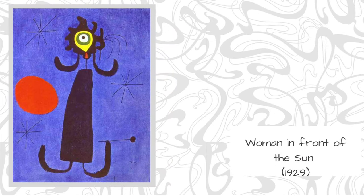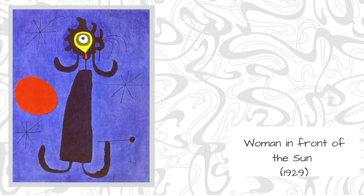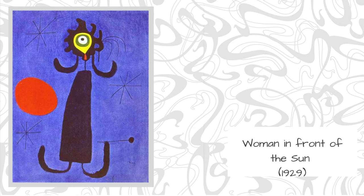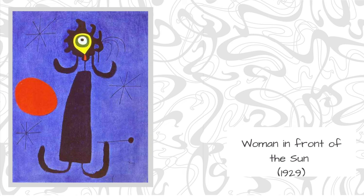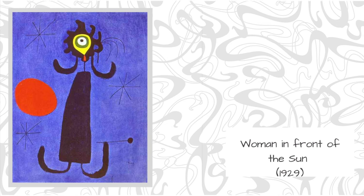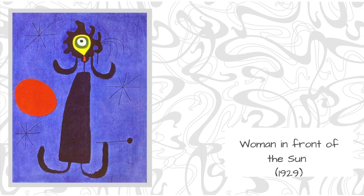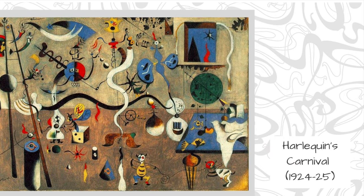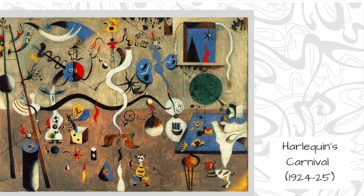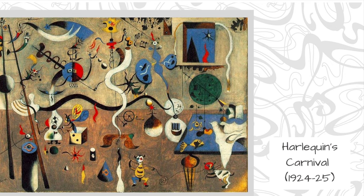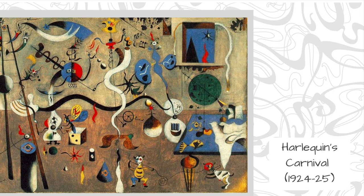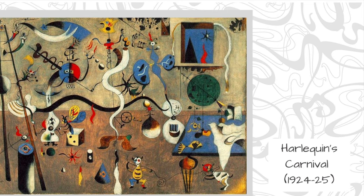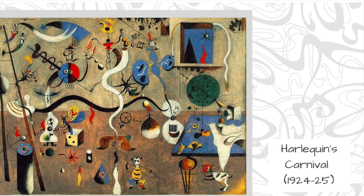Miró used lots of bright colors and organic lines and shapes. In his earlier works you could still see some things being represented — such as in this picture you can still see it is supposed to be a woman in front of the sun, as the title suggests. Harlequin's Carnival is one of Miró's most famous artworks, full of organic lines, shapes, and bright colors. You can still see things being represented from real life, so it is not totally abstract.